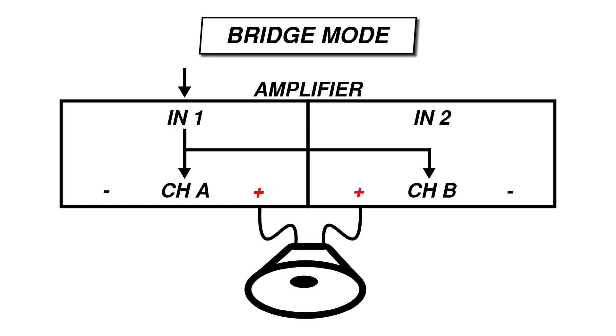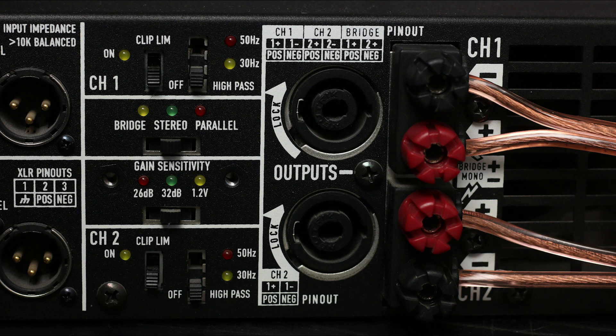Firstly, the way you connect the speakers is usually different in bridge mono mode than it would be in stereo or parallel mono mode. In both stereo and parallel mono mode, the positive and negative terminals of each speaker are connected to their own set of amplifier terminals — positive to positive, negative to negative. Remember, the two amplifier channels are working separately in both of these modes, even though they might be amplifying the same signal.